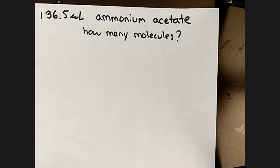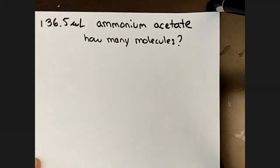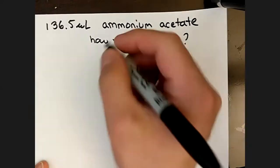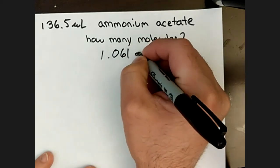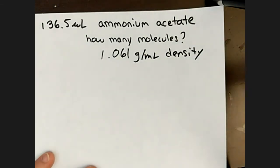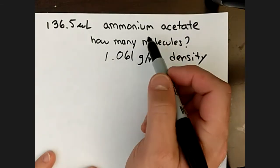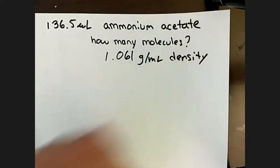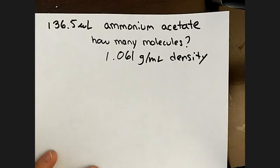The density given is 1.061 grams per milliliter. We also need the molecular weight from our flowchart. Often the formula isn't given directly, so you have to apply your nomenclature knowledge. This is a multi-part problem requiring attention to nomenclature and calculating molecular weights.